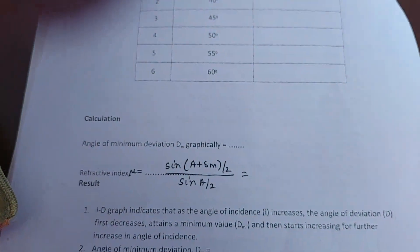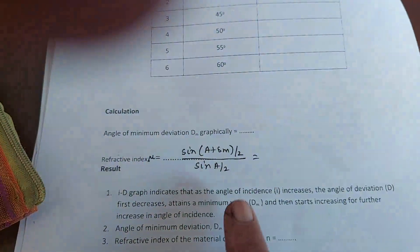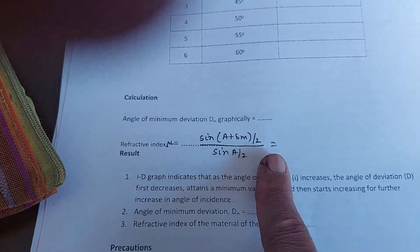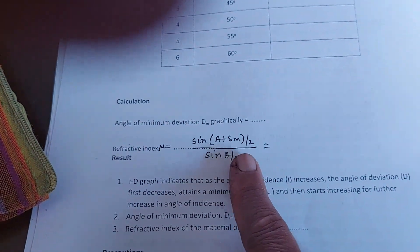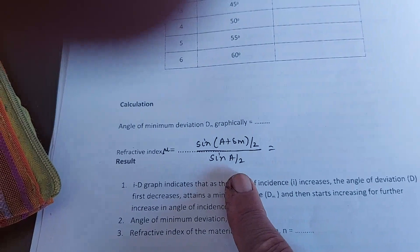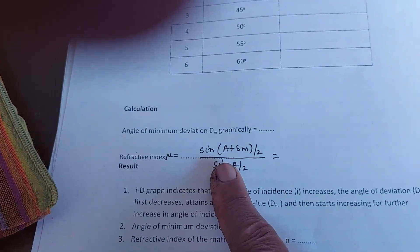After that, in the calculation, you have to write down the angle of minimum deviation as observed graphically and then calculate the refractive index using the formula sin(A + δₘ)/2 divided by sin(A/2), where A is the angle of prism.